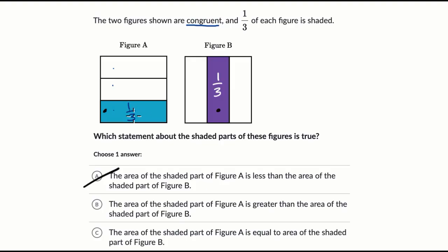Statement A is saying that the teal is less than the purple, and statement B is saying that the teal is more than the purple. But we just said they're equal.